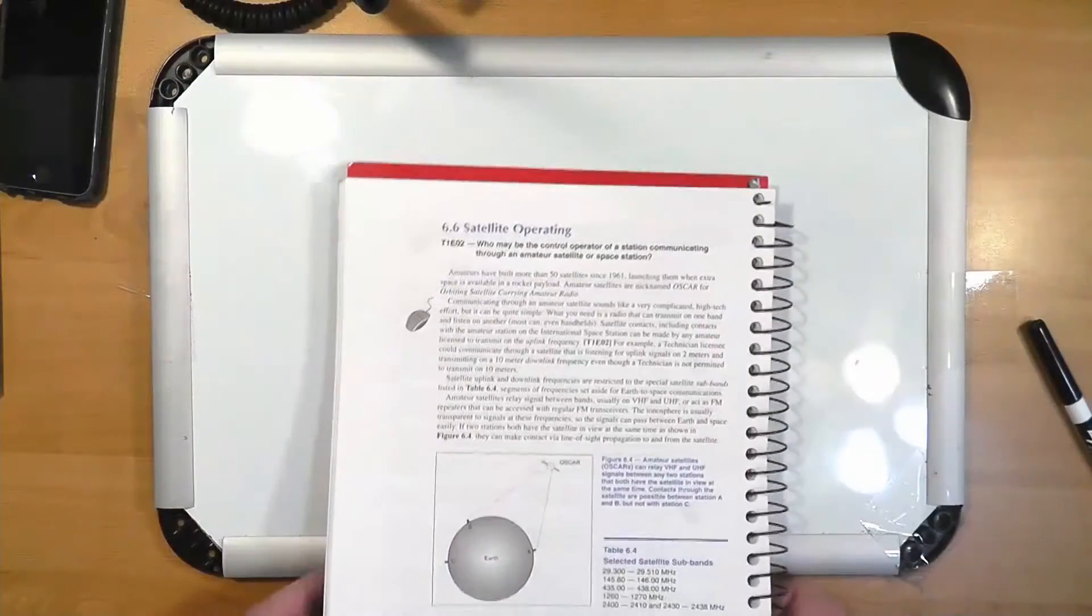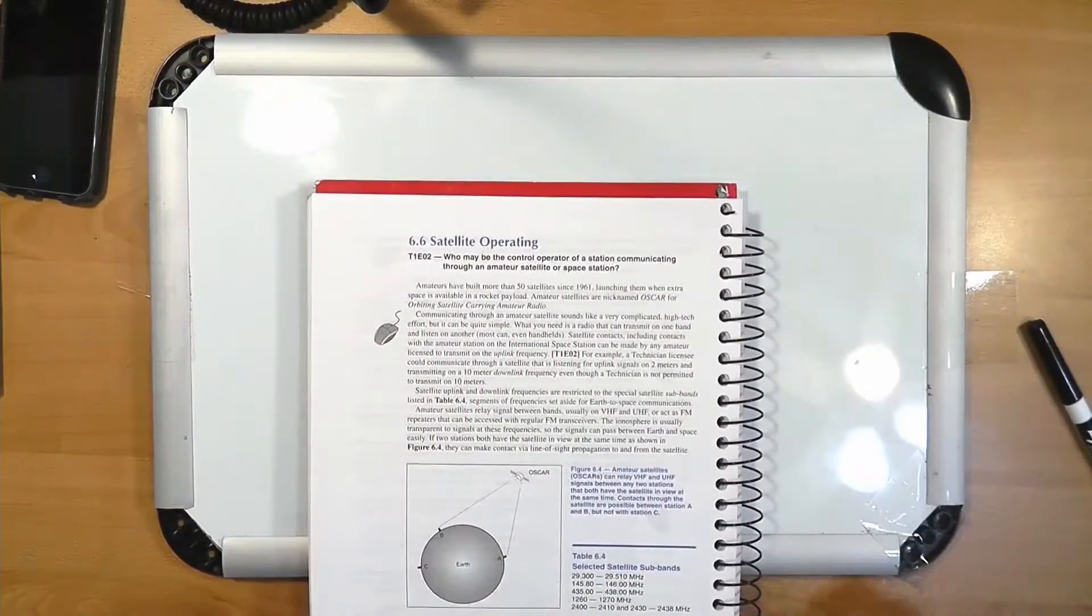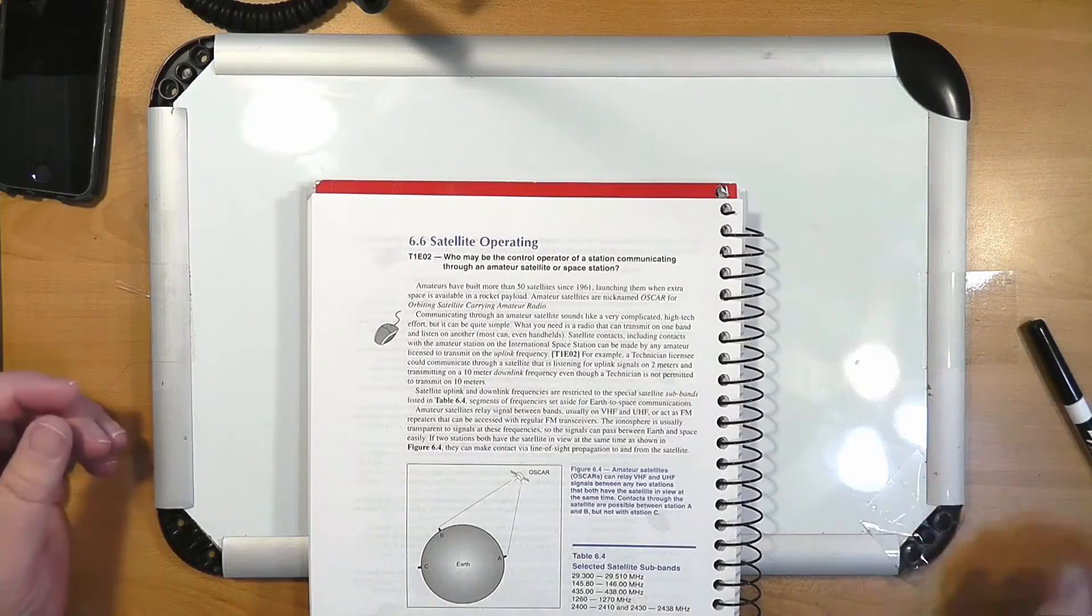There are quite a few satellites in orbit that are amateur satellites. These satellites are built by and operated by radio amateurs. Now, one of the very first questions that's in the book is who can be the control operator at a station that's communicating through an amateur satellite. The rule is if you have privileges for the uplink frequency, it doesn't matter what the downlink frequency is, you're okay. In practice, all the uplinks these days are in the UHF, VHF bands anyway, so you're okay.